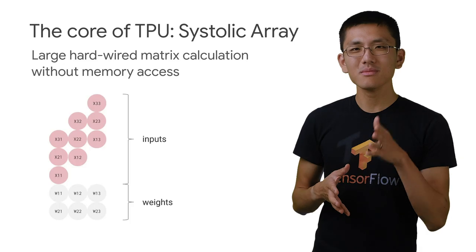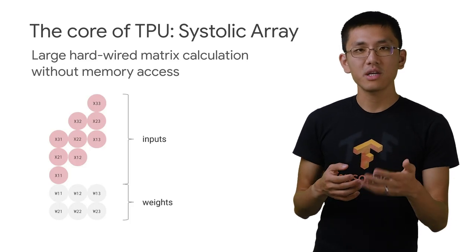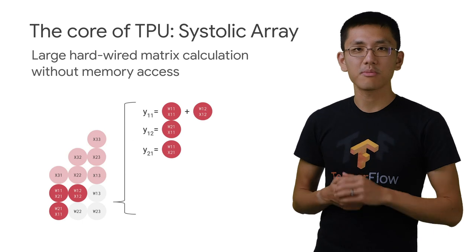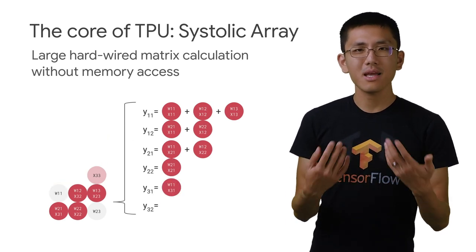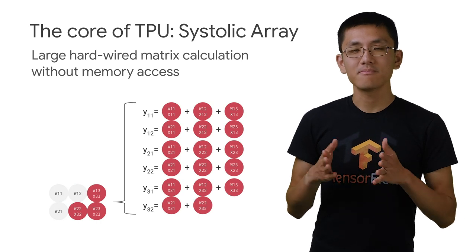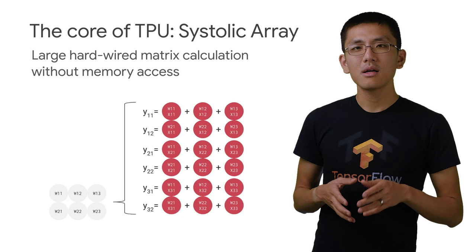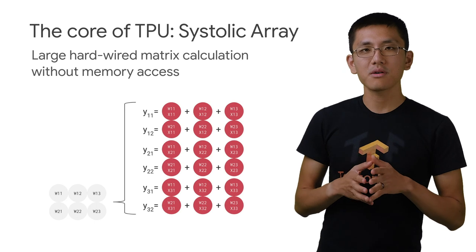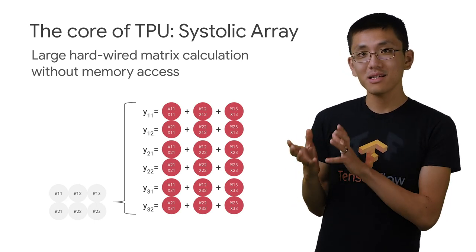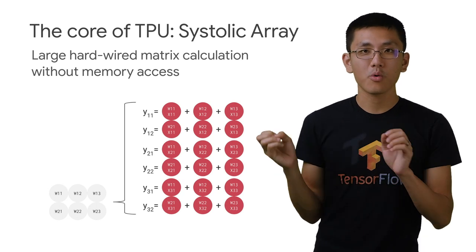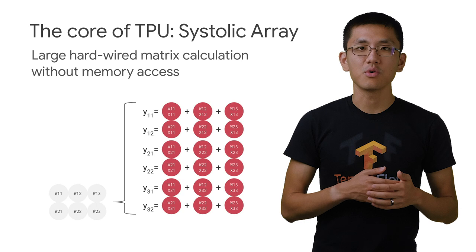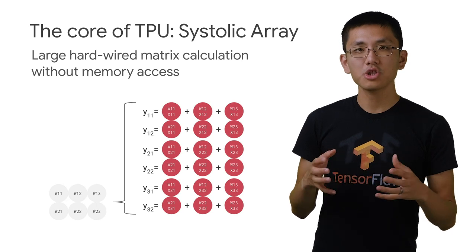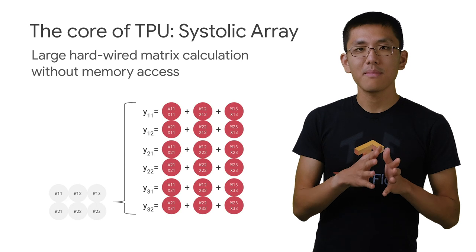Let's talk about the matrix processor. Conventional processing systems read and write to memory very often, sometimes after every single operation, because they do general-purpose processing. In order to support many different kinds of operations, the hardware design must necessarily be fairly generic. However, this leads to bottlenecks due to all of those memory accesses back and forth. What if we could build a special-purpose processor that performed a much more limited set of operations but did so more quickly? This is what the TPU tries to do with its matrix processor — it uses what's called a systolic array in order to do a large, hard-wired matrix calculation without memory access.